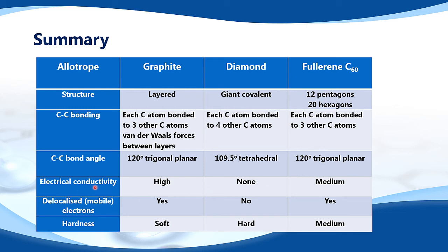Electrical conductivity: graphite is high; diamond has none; and fullerene is medium. Regarding delocalized or mobile electrons: graphite — yes; diamond — no; fullerene C60 — yes. Finally, hardness: graphite is very soft because the layers can slide over each other; diamond is very hard; and fullerene is somewhere in the middle.